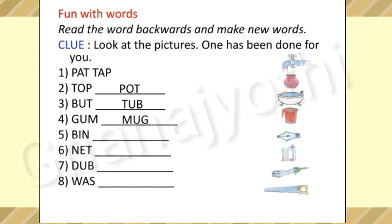Next, fifth one: P-I-N, 'pin' — read the word backwards: N-I-P, 'nip.' The next sixth one: N-E-T, 'net' — we get a new word T-E-N, 'ten,' when we read the word backwards. Seventh one: D-U-B, 'dub' — B-U-D, 'bud.' Eighth one: W-A-S, 'was' — S-A-W, 'saw.'